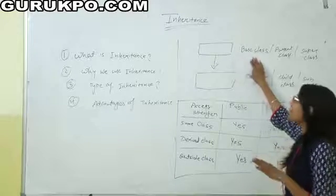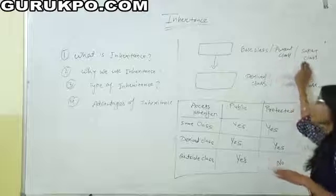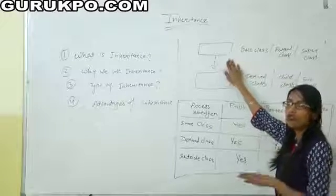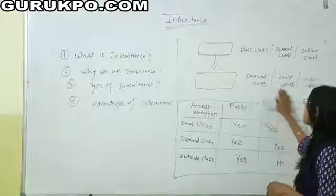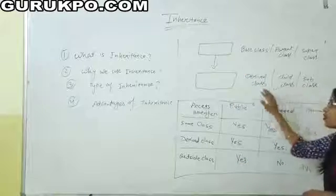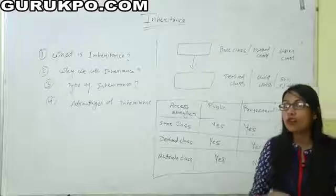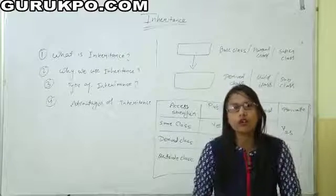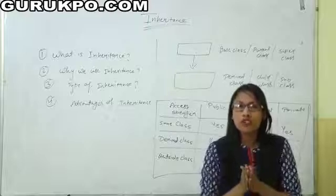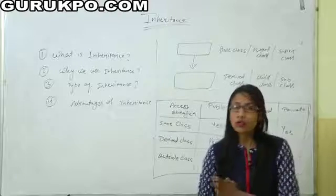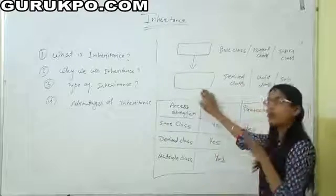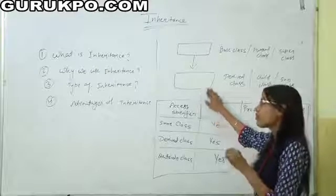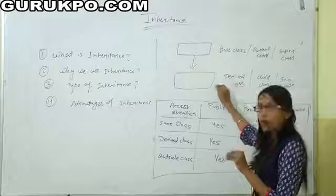The existing class is called the base class, parent class, or super class. The other class which inherits all the data members and functions of another class is called the derived class, child class, or sub class. Inheritance provides the reusability of code without changes in another class, and we can also add data members and functions to the derived class which belong to its own class.